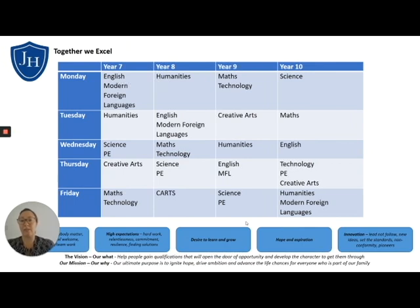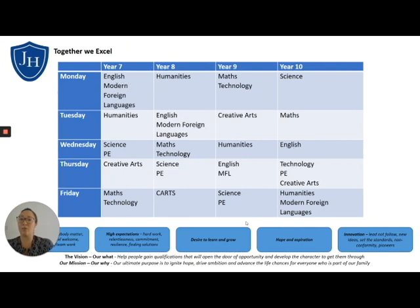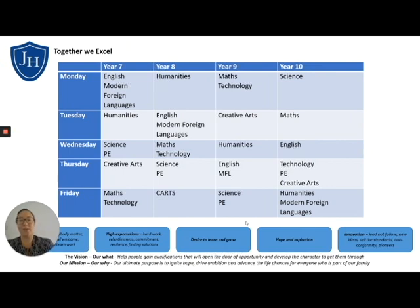If we take Year 7 as an example, I'll show you how that will work. For Year 7, they will only need to submit their English and their modern foreign languages work on a Monday — so any French or Spanish tasks. The work will be on there no later than 7.30 a.m. in the morning and will be accessible throughout the course of the day. The expectation is that you're working in real time, just like you would be if you're at school in your languages or your English lesson, completing your tasks and submitting them on those days.